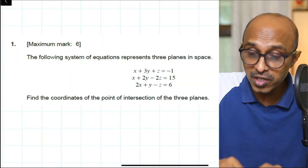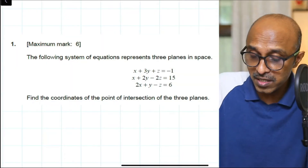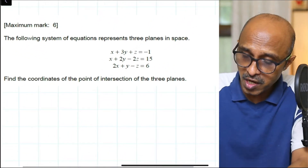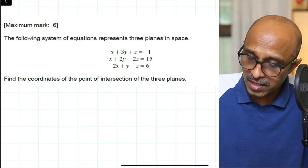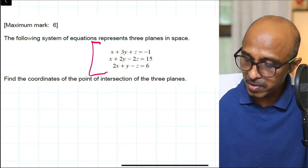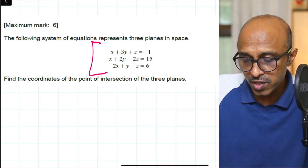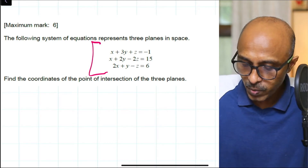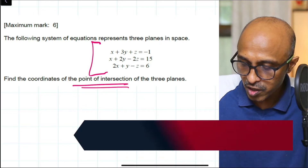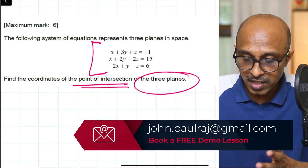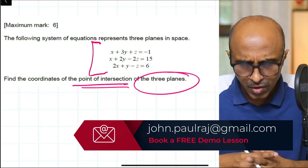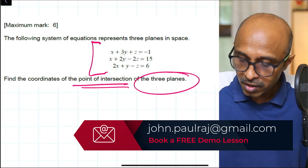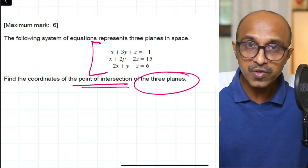For IB students, here is a question from the IB question paper: the following system of equations represents three planes in space. The equations are: x + 3y + z = −1; x + 2y − 2z = 15; 2x + y − z = 6. We need to find the coordinates of the point of intersection of the three planes, which is the solution to the system.